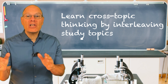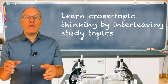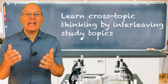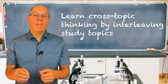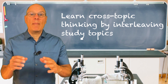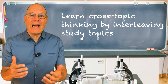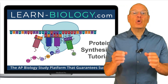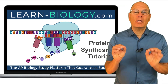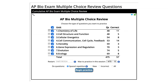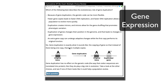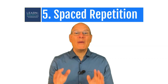Principle four: when you study, interleave study topics. The questions on the AP Bio exam involve a lot of cross-topic thinking. The way to prepare for that is by interleaving content — doing a question about genetics, followed by protein structure, followed by DNA, followed by community ecology. Learn-biology.com makes interleaving easy — it's the default setting. When you go to the multiple choice test, leave the topic picker with all topics checked and the site will do the interleaving for you.